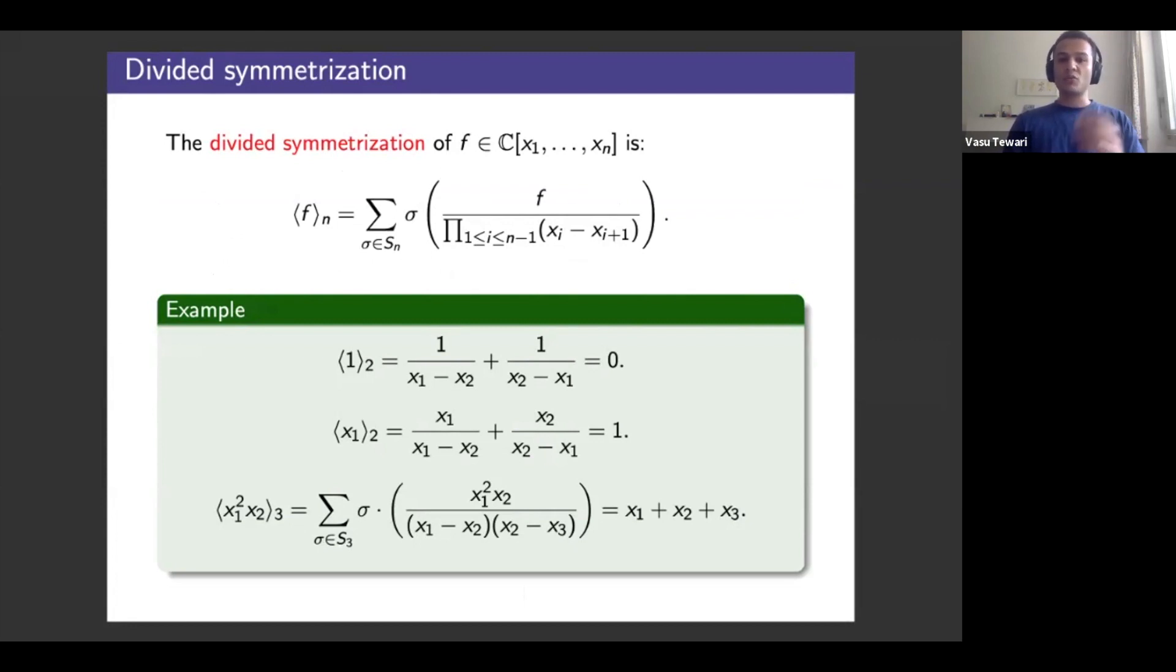What I get I call the divided symmetrization of f. And here's three examples. The first one is kind of lame. You start with the constant function one. You act with the symmetric group which essentially flip signs and the result is zero. A tiny bit more exciting is the monomial x1 and if I perform the divided symmetrization over the two elements symmetric group I essentially compute divided differences. So divided symmetrization over S2 is divided differences. So you get one again. And a little bit more non-trivial: you start with the monomial x1 squared x2 and you perform this divided symmetrization over three letters.